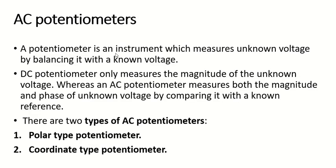Welcome to the new topic: AC potentiometer. A potentiometer is an instrument used to measure the unknown voltage by balancing it with a standard voltage. We are finding the unknown voltage in a potentiometer. We have studied two types of potentiometer: DC and AC.